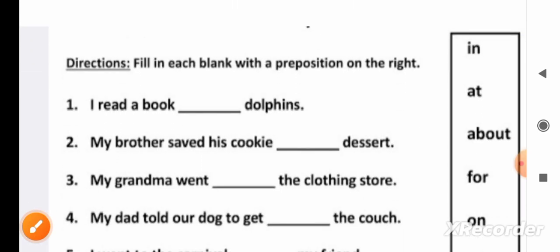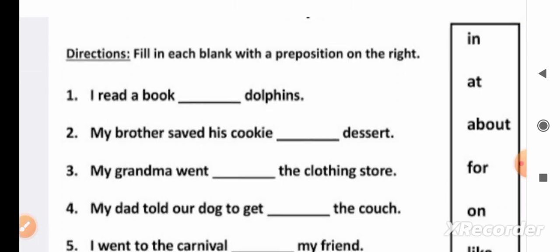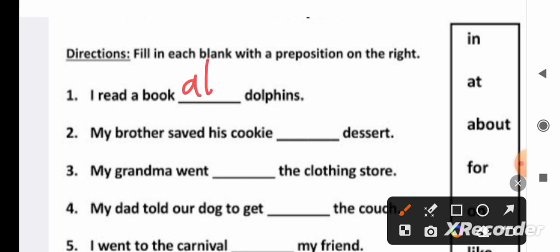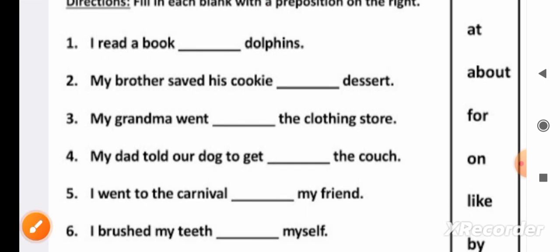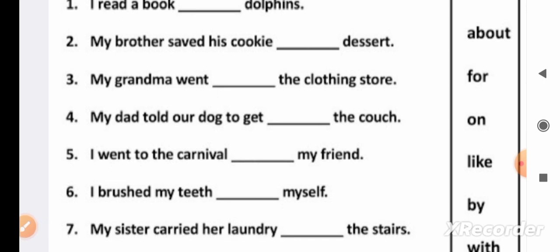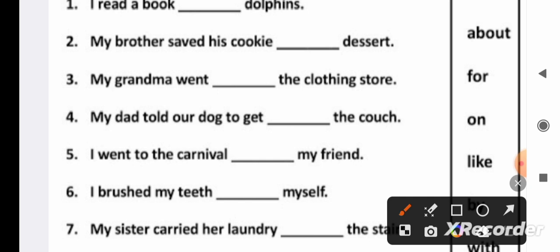Now see the next exercise. I read a book... In the first it will be about. I read a book about dolphins. Second, my brother saved his cookie for... we have to fill this preposition from this box we see here. My grandma went to the clothing store. My dad told our dog to get off the couch.